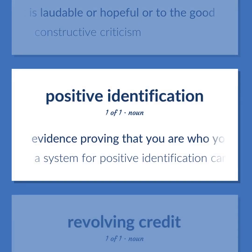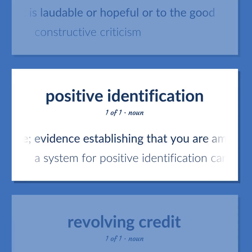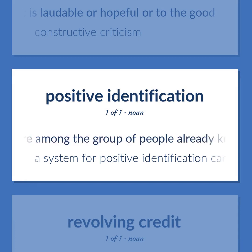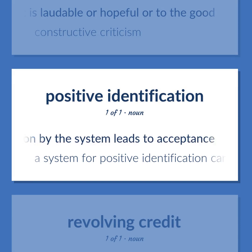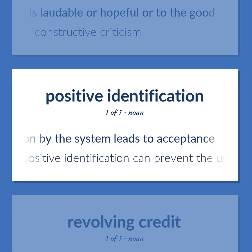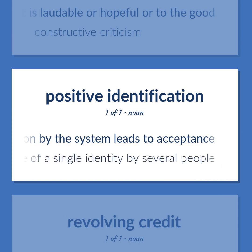Identification: Evidence proving that you are who you say you are. Evidence establishing that you are among the group of people already known to the system; recognition by the system leads to acceptance. A system for positive identification can prevent the use of a single identity by several people.